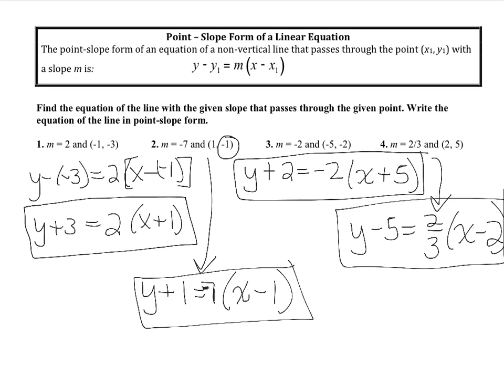Pay close attention: when your points were negative, they appear positive in the form. When going from the form back to the point, because we're subtracting the x and y, you pull out the opposite of the term. So if the form says minus 1, the x-value was positive 1; if the form says plus 1, the actual point value was negative 1.